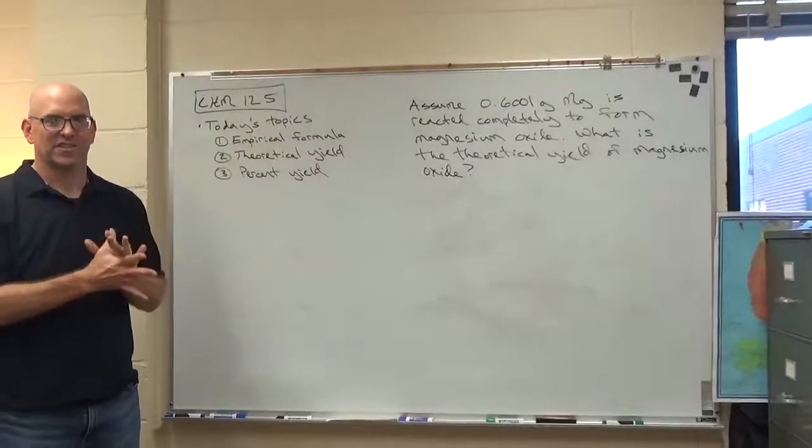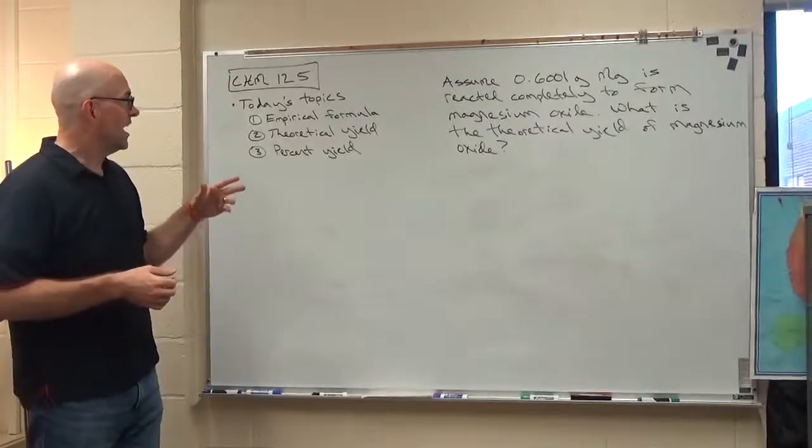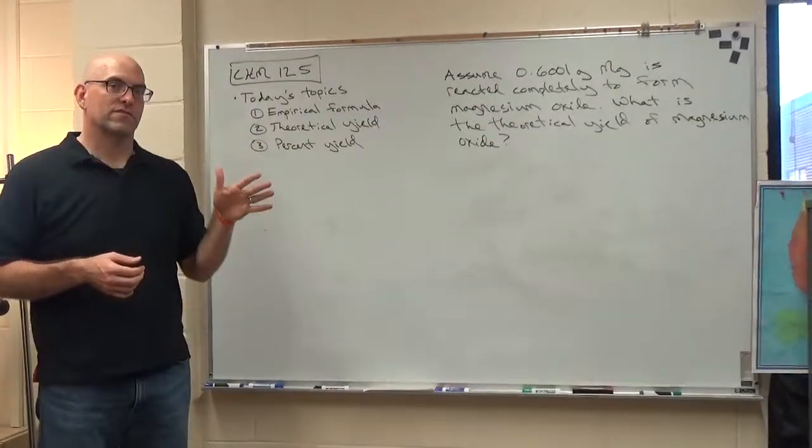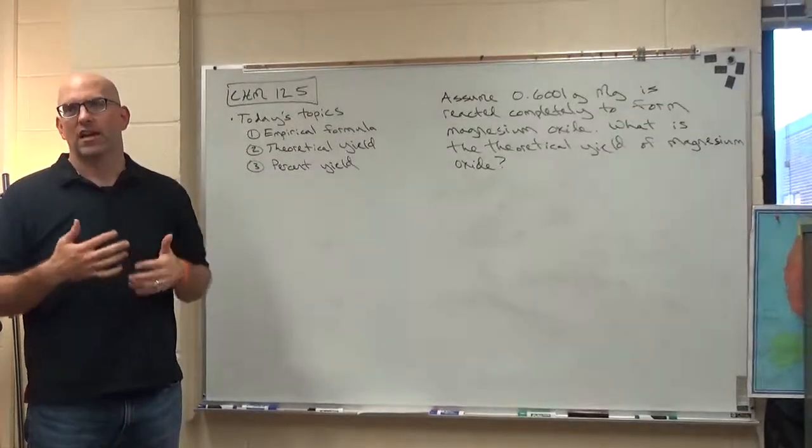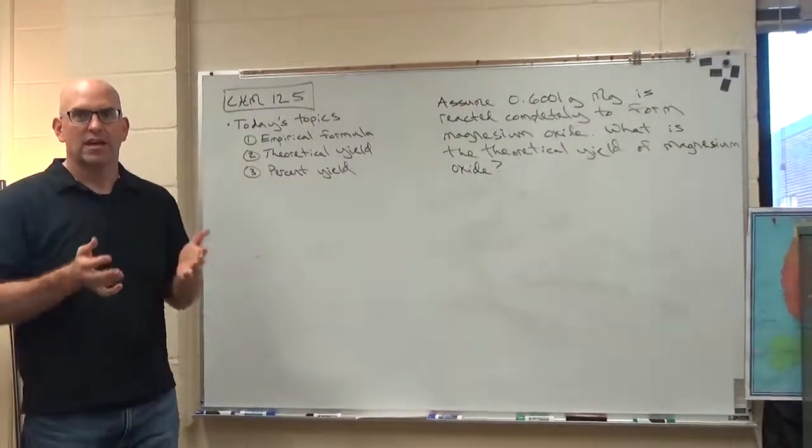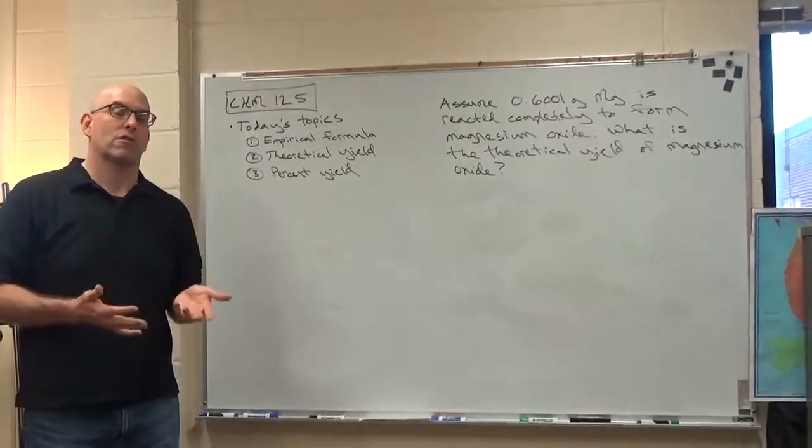All right, welcome back. So this is our second video for the semester, Chemistry 125. And the point of the second lab is to calculate or determine the empirical formula of magnesium oxide. The empirical formula represents the simplest whole number ratio between atoms in a molecule. It's a pretty straightforward lab.